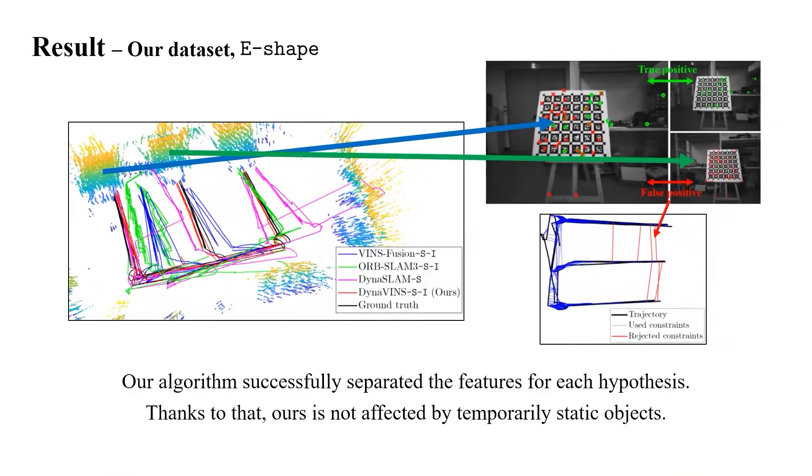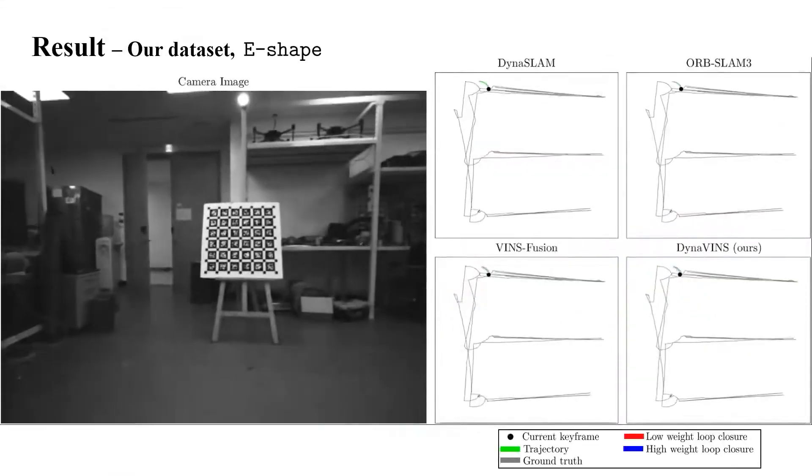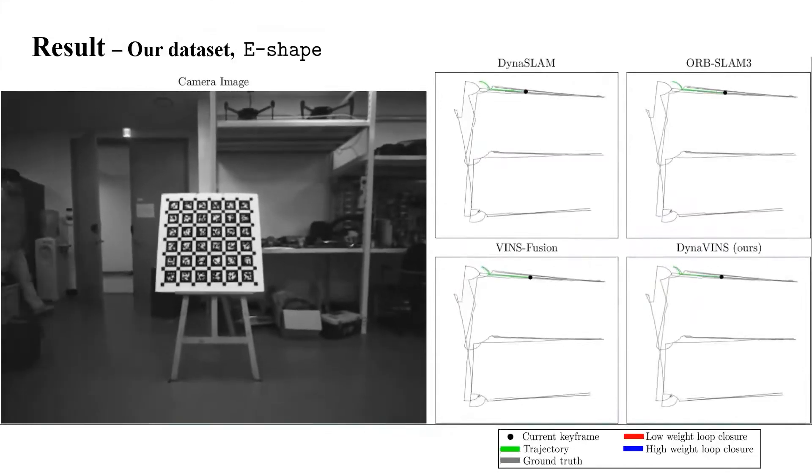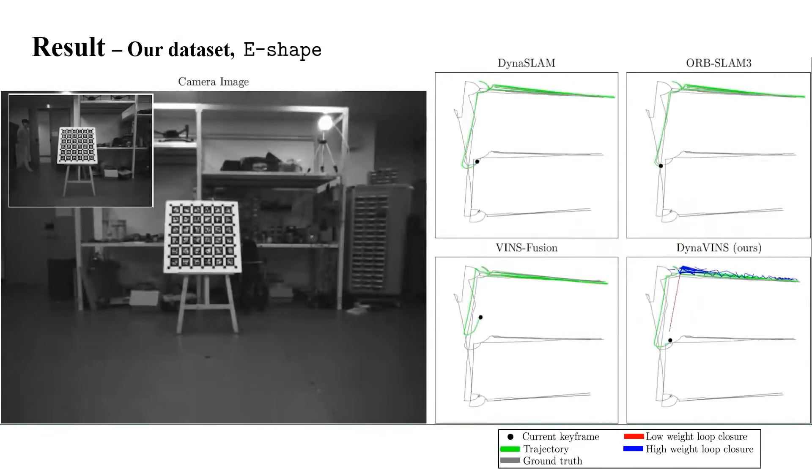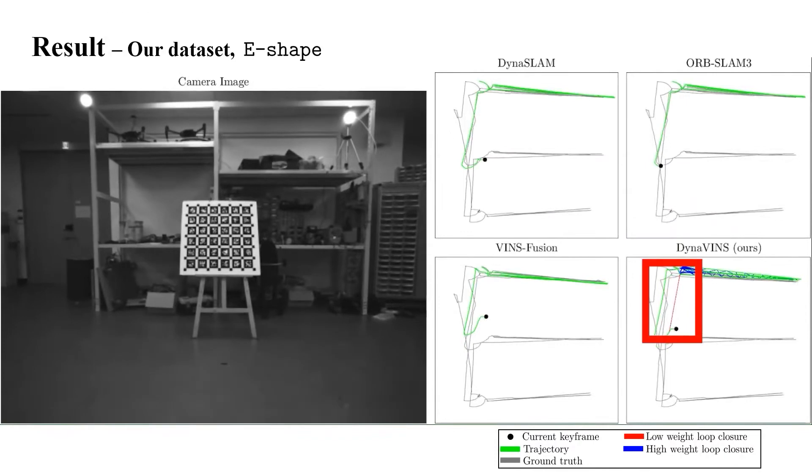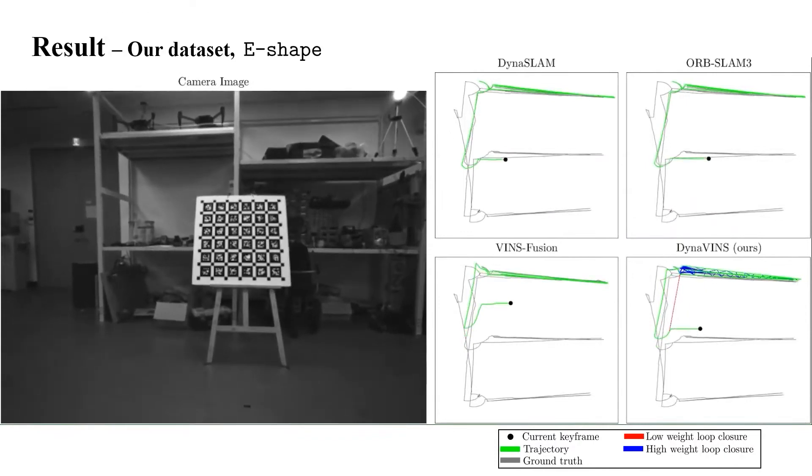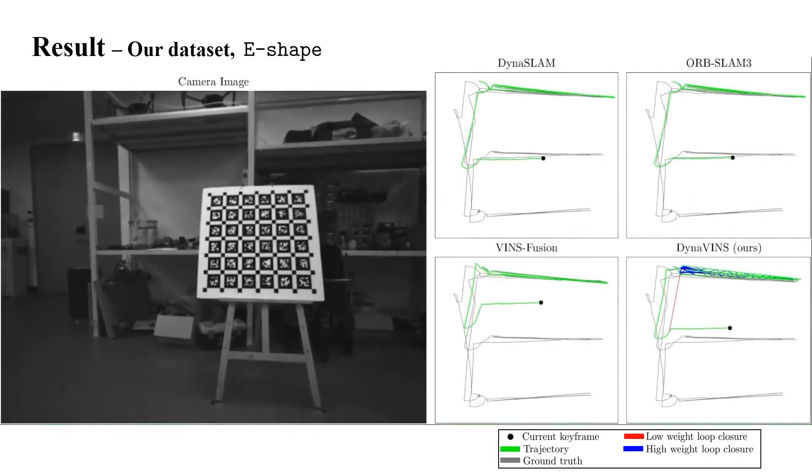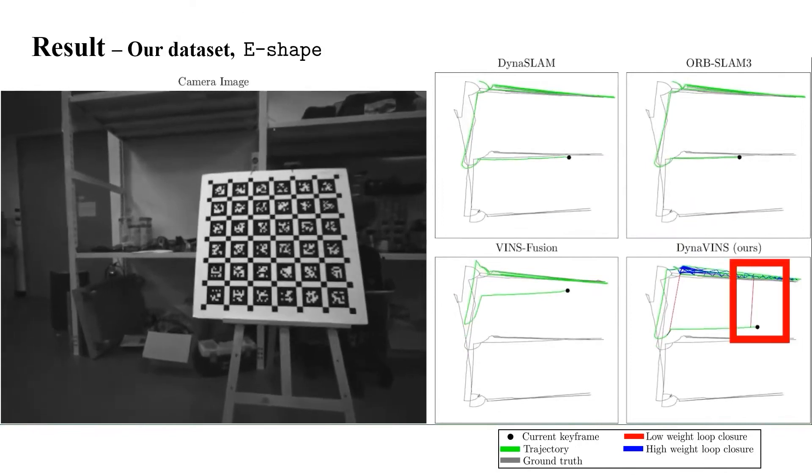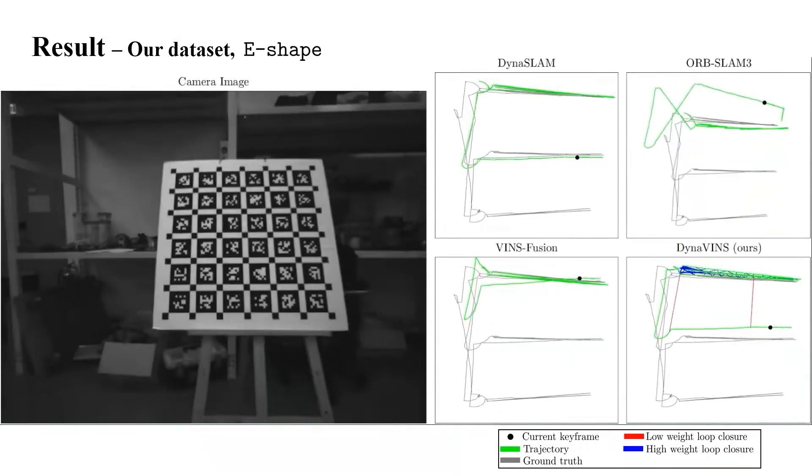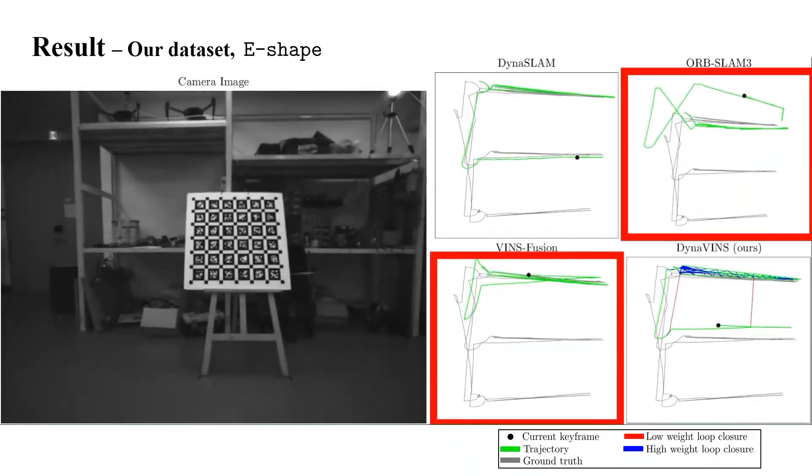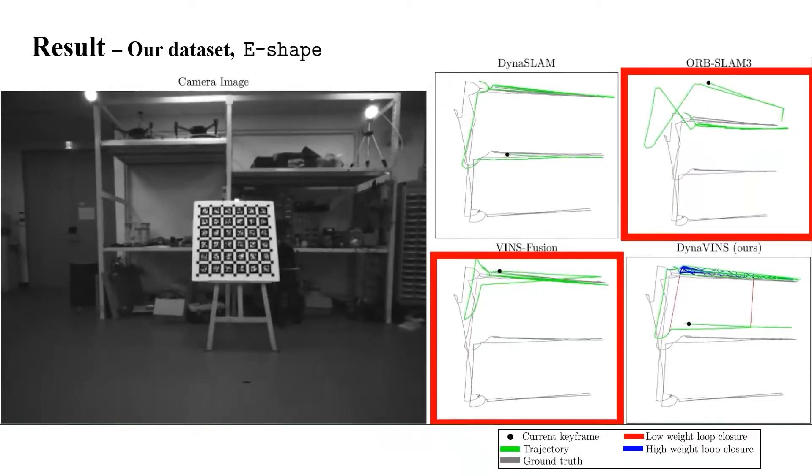We will show the results of algorithms on our E-shape dataset. Here, an exactly same object observed before is detected at a different location. Our algorithm determined the loop closure as a false positive. Thus, even though the trajectory is affected by it, the effect of the loop closure is reduced. And as you can see, other algorithms use the false positive loop closures and the trajectories are being inaccurate.